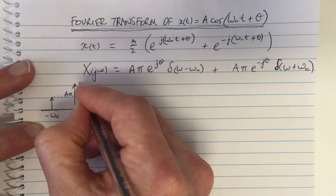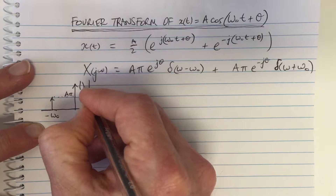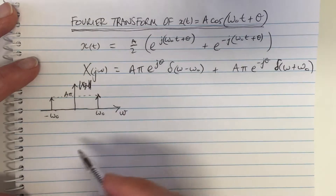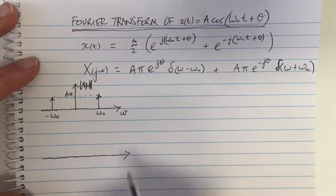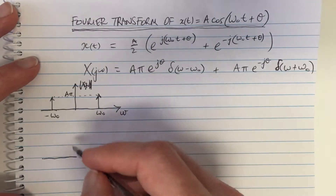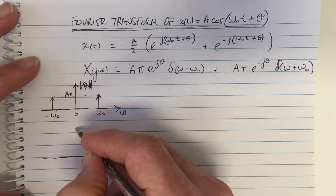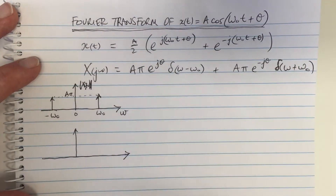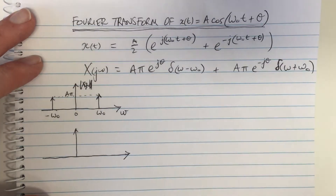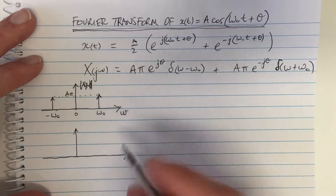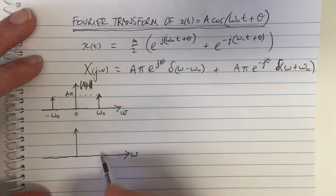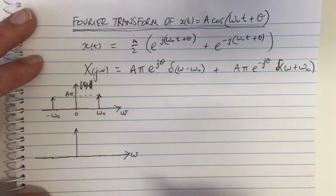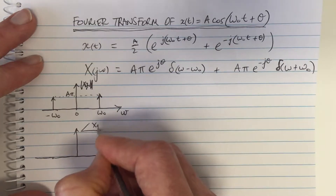So this here is the magnitude of the Fourier transform. Let's plot the phase underneath. We always have a magnitude and a phase. This is really where we want to start understanding what this e to the j*theta is. I want to do it for different values of theta so that we can see what it means in physical waveforms. There are only going to be possibly two values — one at omega_0 and one at negative omega_0 — and this is the phase of X(j*omega).